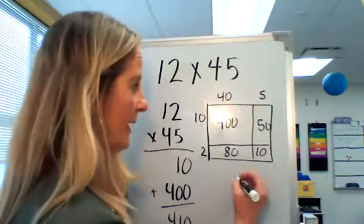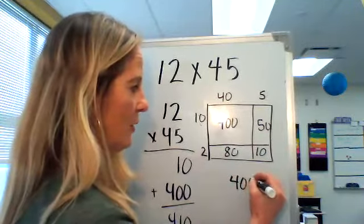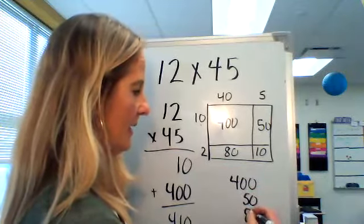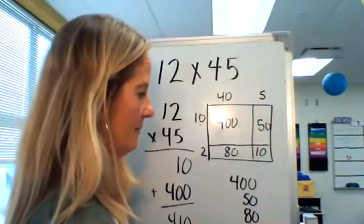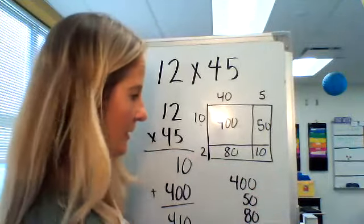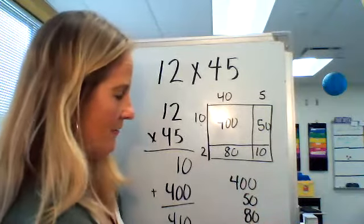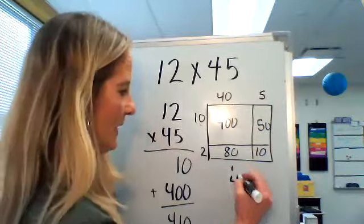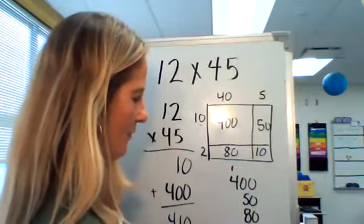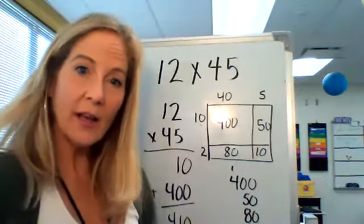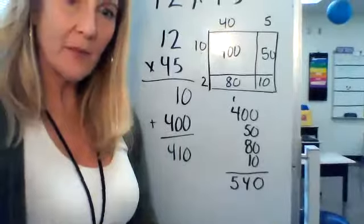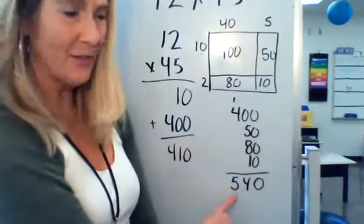This would be the final answer, so let's see what it is. It'd be 400 plus 50 plus 80 plus 10. So zero plus zero plus zero, five plus nine is 14, and four hundreds plus one more hundred. So that's our final answer, 540, and you can see that these are different.